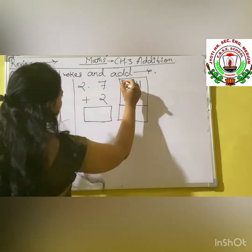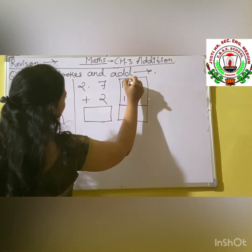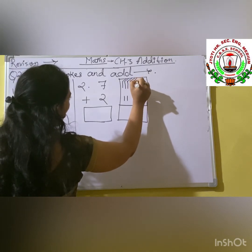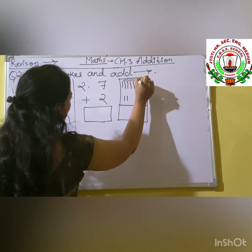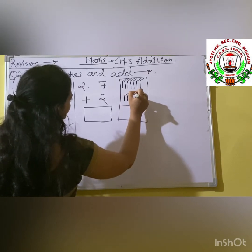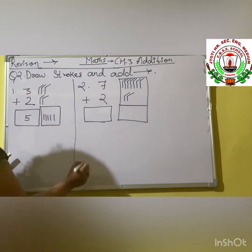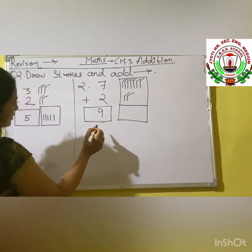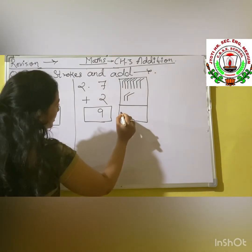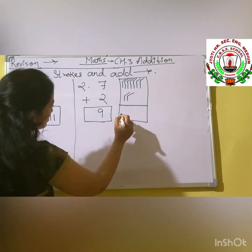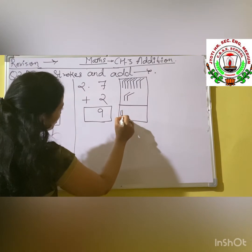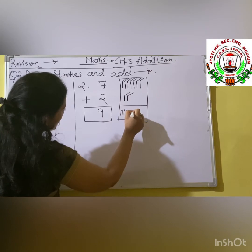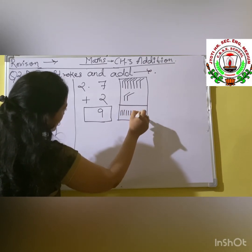How many strokes do we have? 1, 2, 3, 4, 5, 6, 7, 8 and 9. So we are having 9 strokes. Here we have our answer. And we draw the answer strokes: 1, 2, 3, 4, 5, 6, 7, 8 and 9.